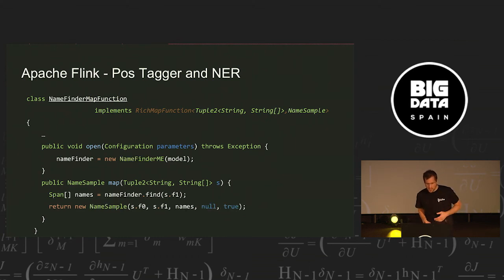So it's basically the same for the name finder. You can have a rich map function, create name finder in the open, the model is shared between threads, name finder is created per thread, and input is again tokenized sentence. It passes to the name finder, it detects the name spans, it can be multiple names inside one sentence, and then in this case we just write into a name sample, which is a sentence, with the names, and output is here.